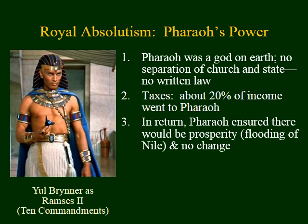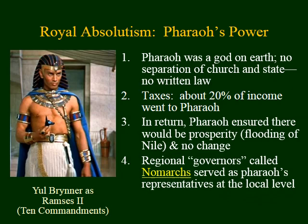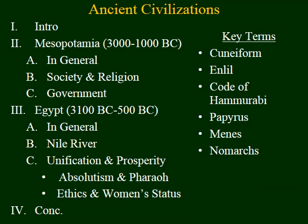Pharaoh was helped with his administrative duties by a series of governors called nomarks — kind of like mayors or governors of today. Next, I'd like to look at some additional characteristics of society in Egypt, particularly their views on ethical behavior and the status of women.